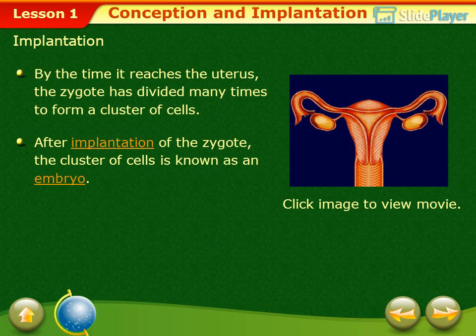By the time it reaches the uterus, the zygote has divided many times to form a cluster of cells. After implantation of the zygote, the cluster of cells is known as an embryo.